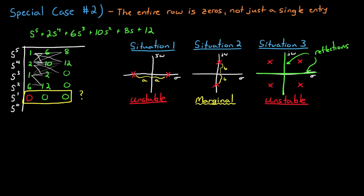So when you encounter a row of all 0's, at a minimum you can assert that the system is marginally stable, but it's possible that it's unstable. Now you can determine this by completing the rest of the table in this manner.